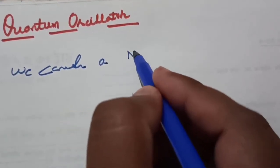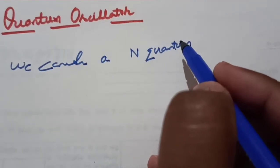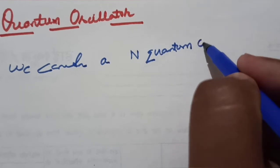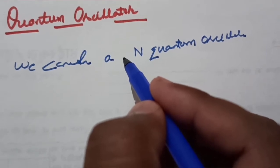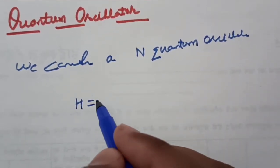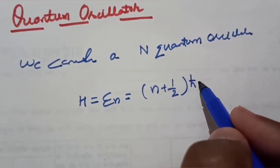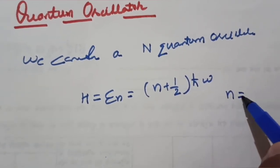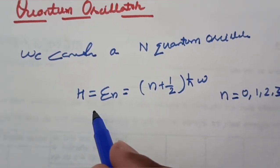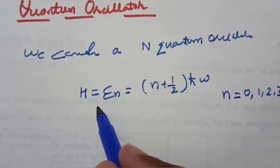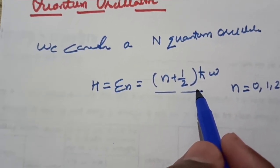We are considering a system of N quantum oscillators. According to quantum mechanics, the energy eigenvalue for a one-dimensional harmonic oscillator is given by epsilon_n equals (n + 1/2) times h-bar omega, where n equals 0, 1, 2, 3, and so on. This is the energy eigenvalue of a one-dimensional harmonic oscillator.